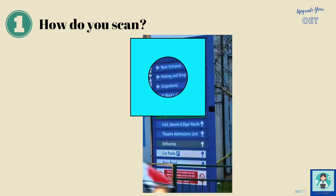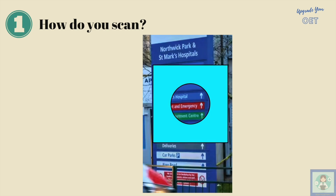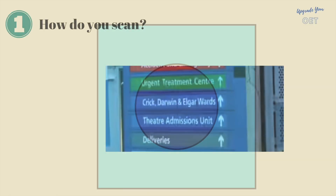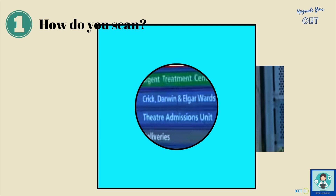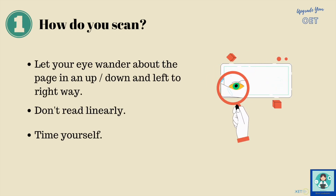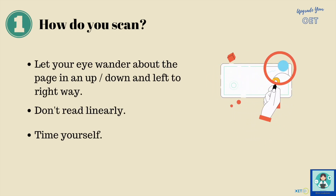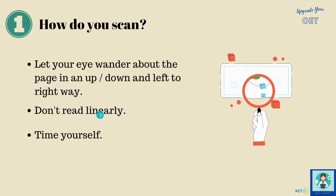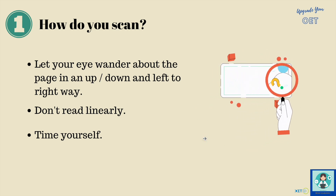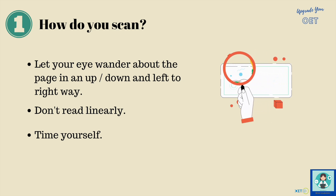Don't read linearly. Don't read up to down. Just let your eye wander about. You're moving from left to right, and then you find something that says 'wards,' and then you look much more closely at that, and you find that the Crick, Darwin, and Elgar wards are straight ahead. So to find the Darwin ward, you have to go straight ahead. What you're doing here is letting your eye wander about the page — going from left to right, down a little bit, up again. Basically, you're not reading linearly. We're going to do some timed exercises today to get you practised doing this.